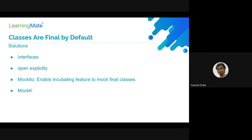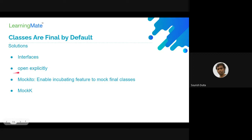Either we can use an interface or make the class open. Mockito also has an incubating feature that allows mocking final classes, but it is not enabled by default. An alternative is the MockK framework, which can be used in place of Mockito. MockK is written specifically for Kotlin to support mocking final classes by default.